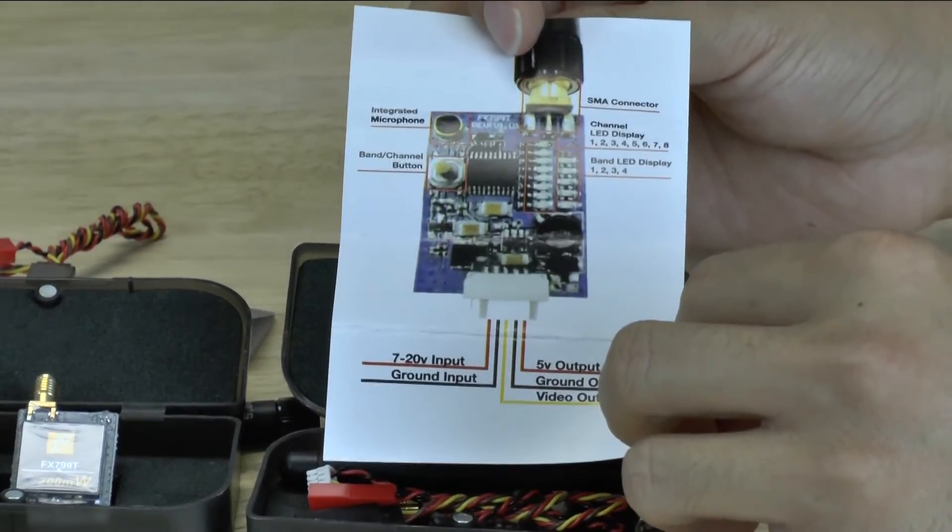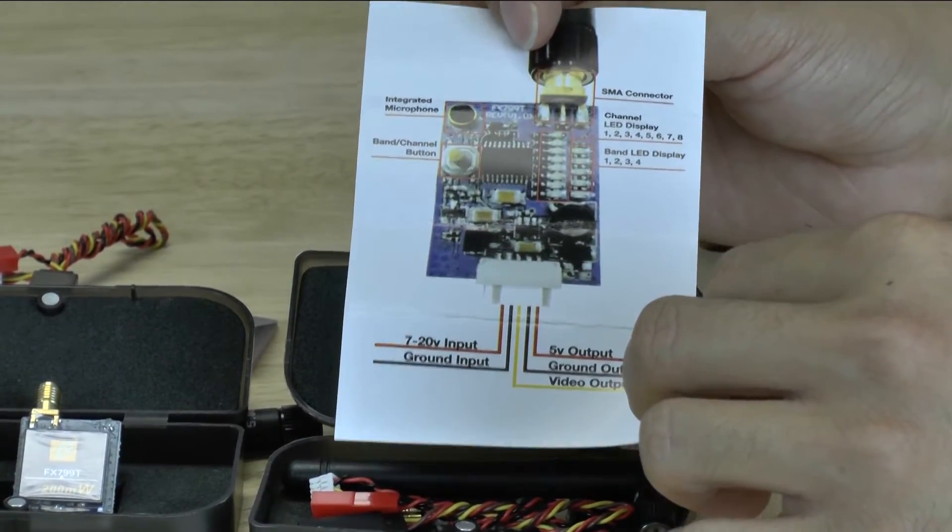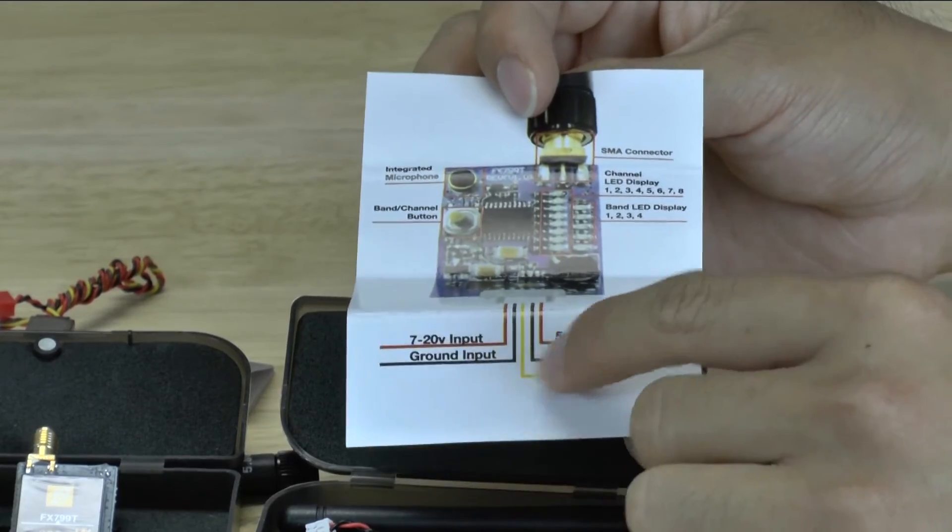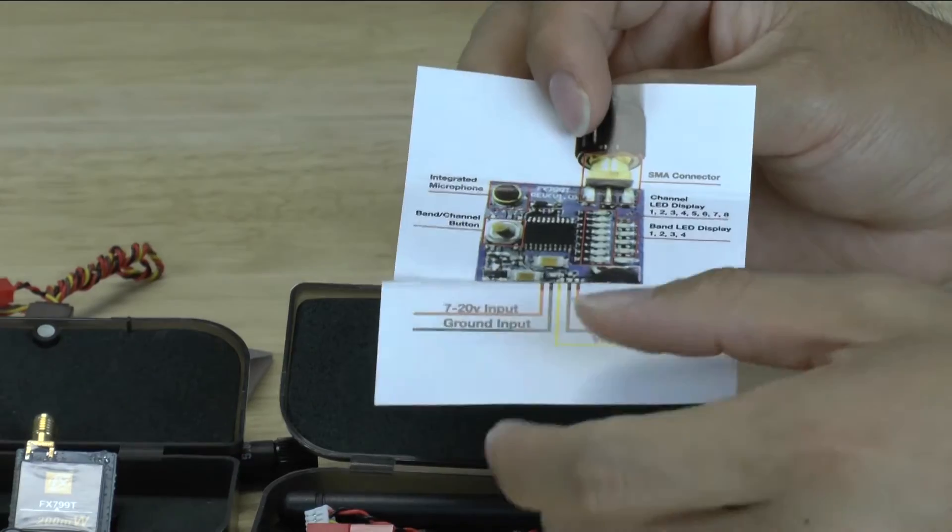On the other side, they have a full screen image of what the VTX does. And it's very similar: 7 to 24 volts and then 5 volt out, LEDs, microphone, and then push button.